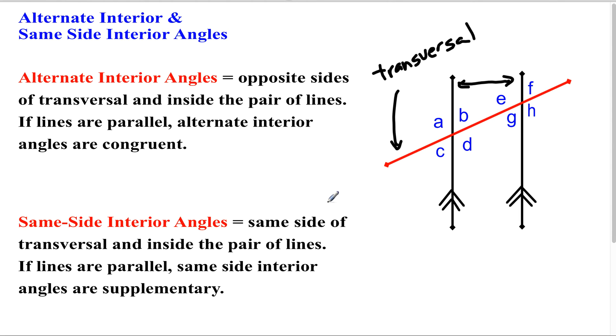So if we're looking for opposite and inside, B and G would be on opposite sides of the transversal and in between the parallel lines. So that is one pair of alternate interior angles.